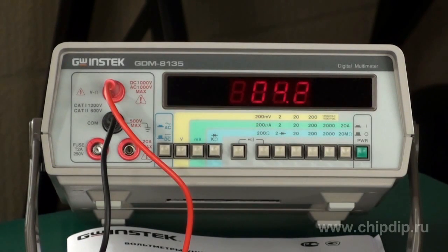To measure direct current, the sensing wires remain in the same terminals. With the measurement mode control switch, we select the current.